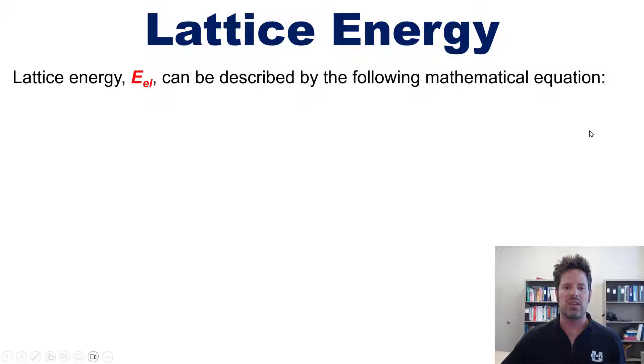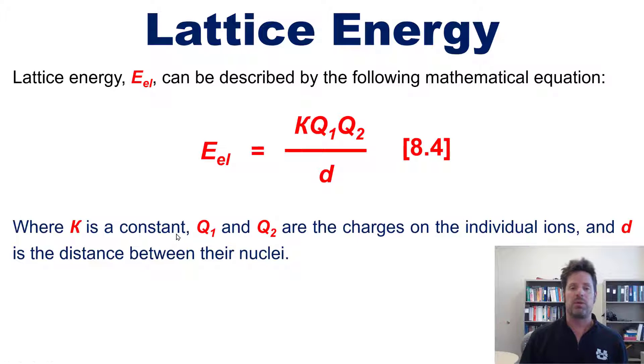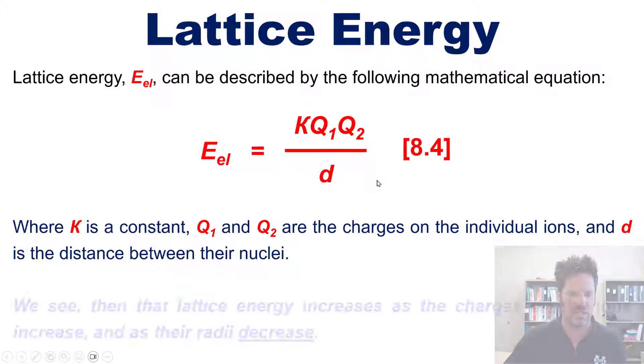Now lattice energy, sometimes abbreviated with this symbol, can be described by using the following mathematical equation: E_el = KQ₁Q₂/d, where K is a constant that varies according to some parameters we won't discuss here, and Q₁ and Q₂ are the charges of the individual ions, cation and anion, while d is the distance between their nuclei.